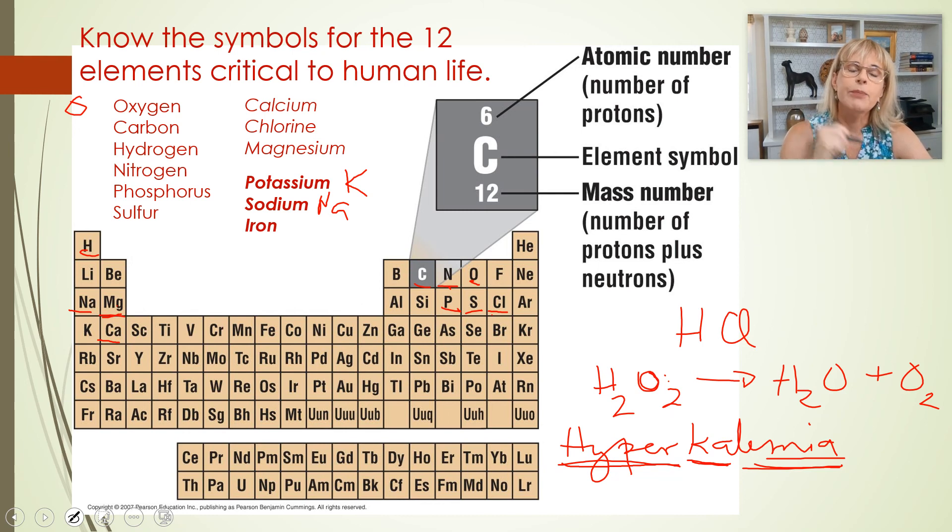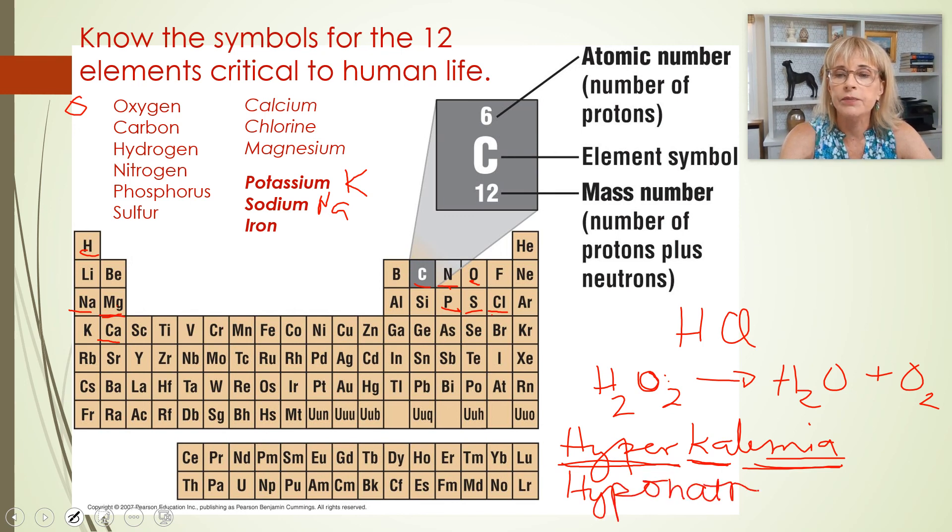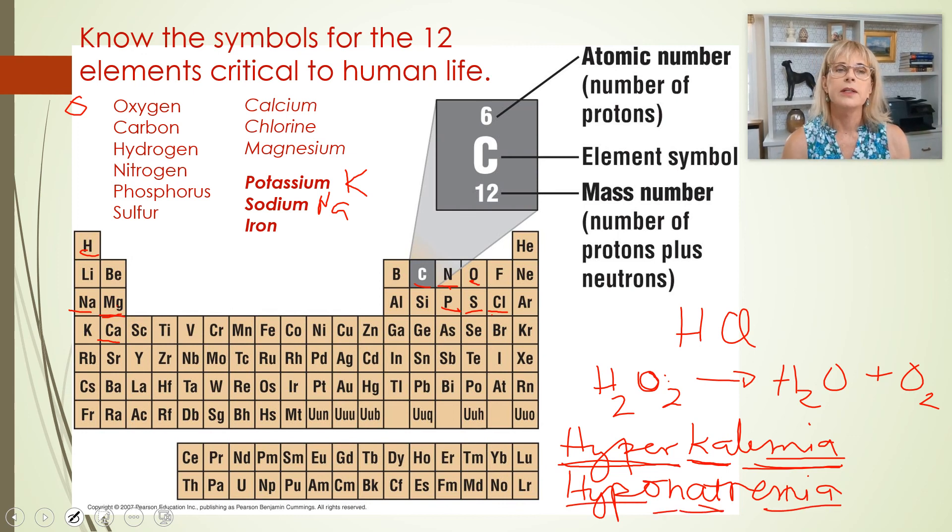By the way, too much sodium: hypernatremia. Not enough sodium in the blood, a little more common in humans than the opposite, is called hyponatremia. Hypo: not enough in the blood. What? Sodium. And then iron—iron is Fe, and iron is critical to making the hemoglobin that carries oxygen in your blood.